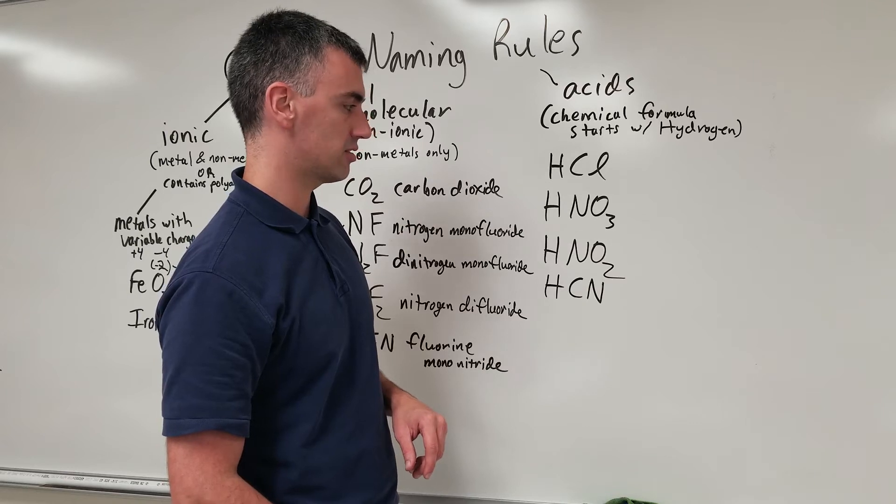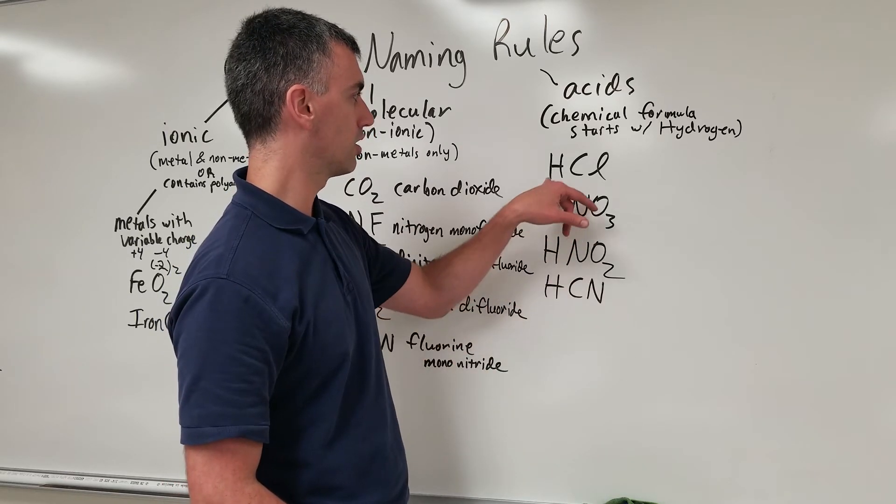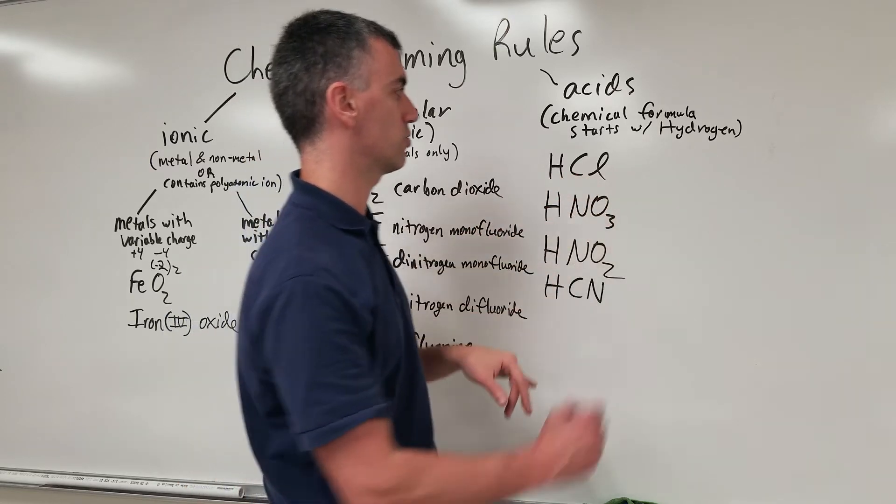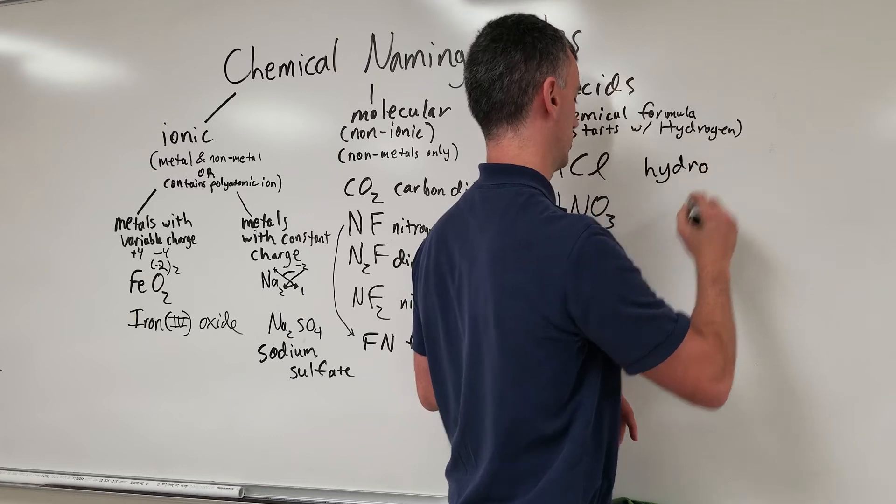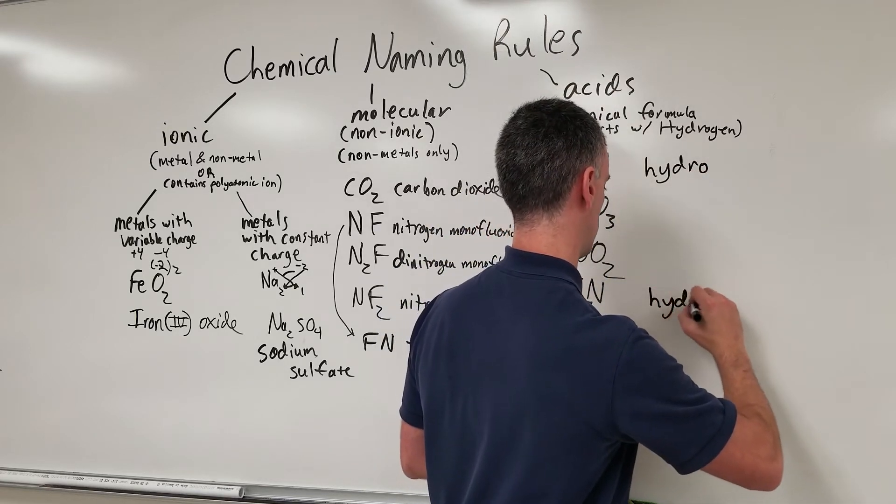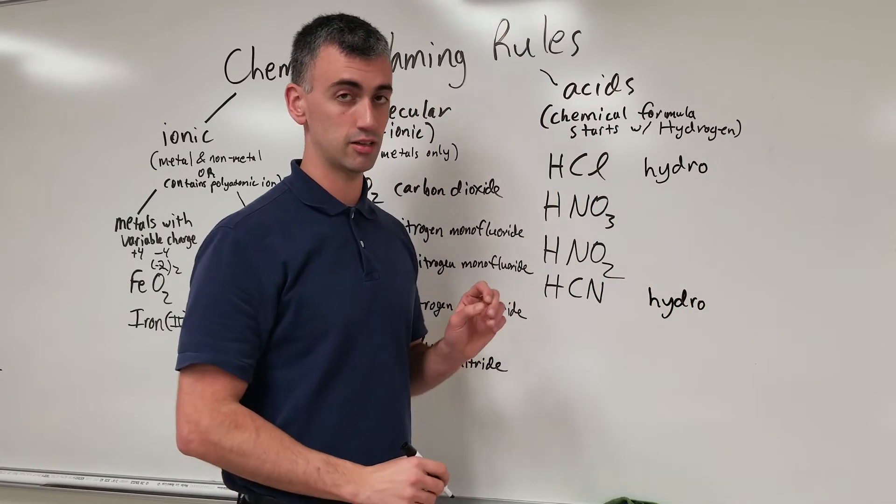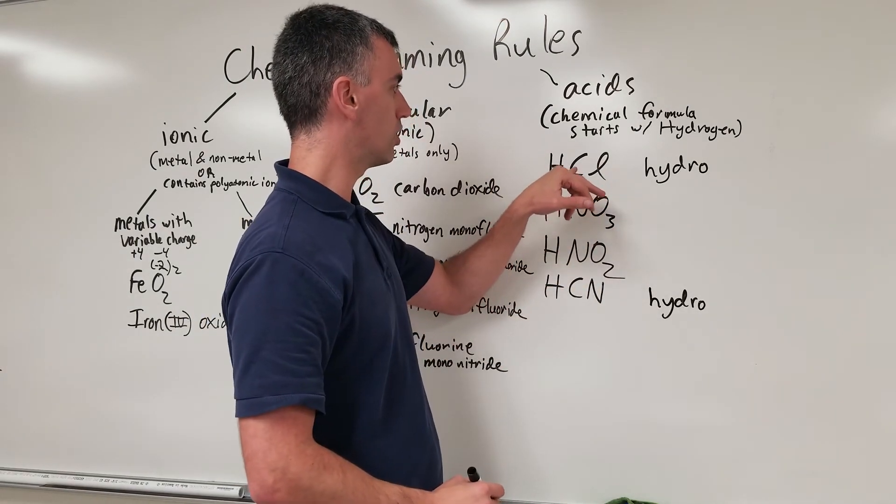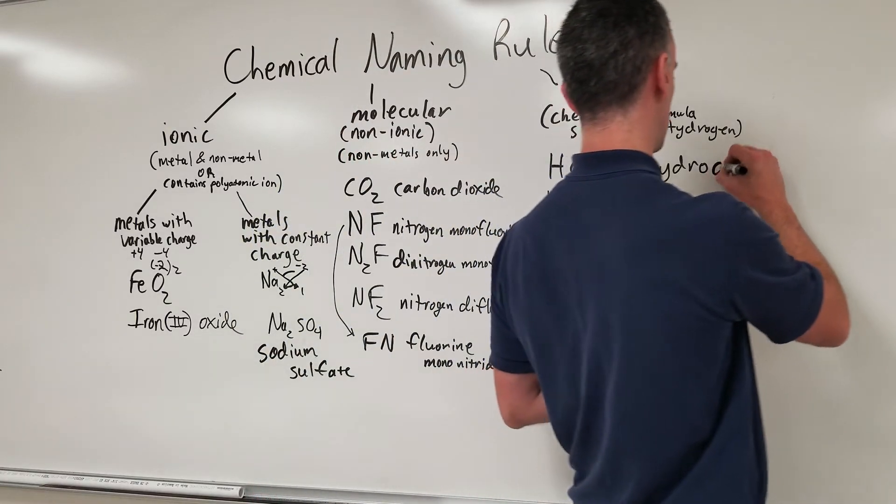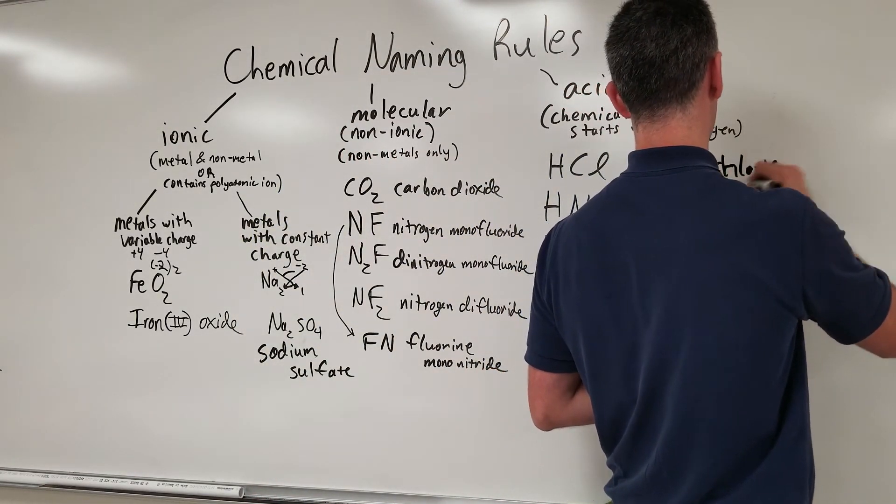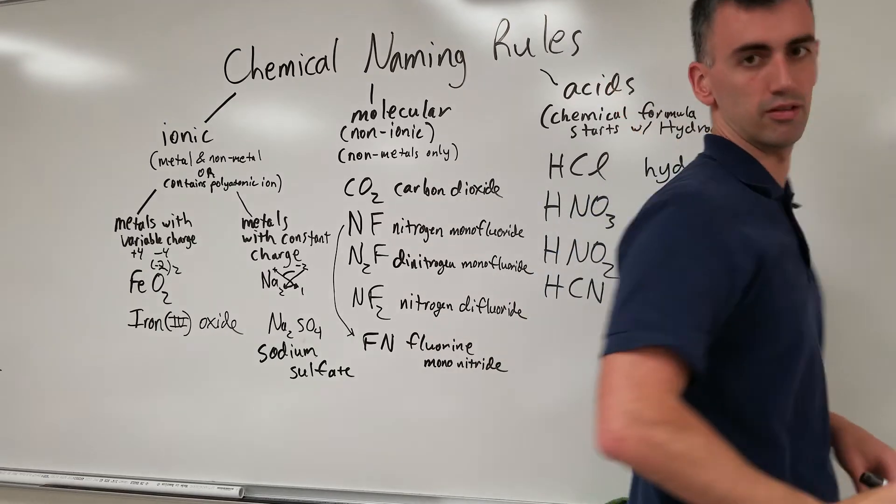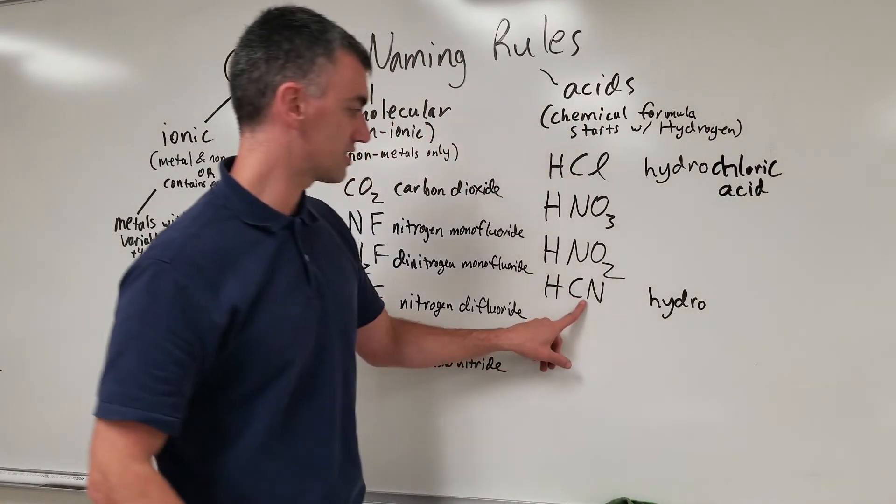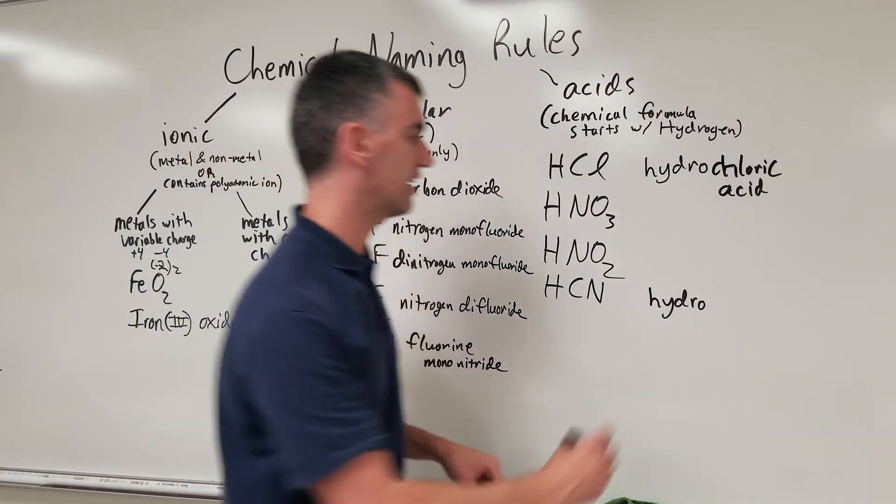The way you name it is based on what's in there, but because there's no oxygen, the name of the acid is not only based on what's in there, but it also starts with hydro. Anytime you see a formula with no oxygen in it, and it fits an acid, the name is going to start with hydro. This is hydrochloric acid. This is cyanide right here. So it becomes hydrocyanic acid. Cyanide becomes cyanic.